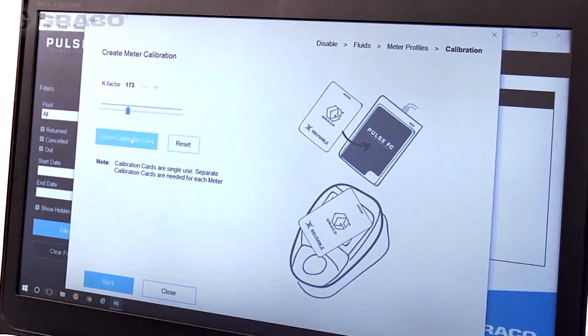The Create Meter Calibration pop-up screen appears. Click on Create Calibration Card. The message Meter Calibration Successfully Programmed to NFC Device appears.